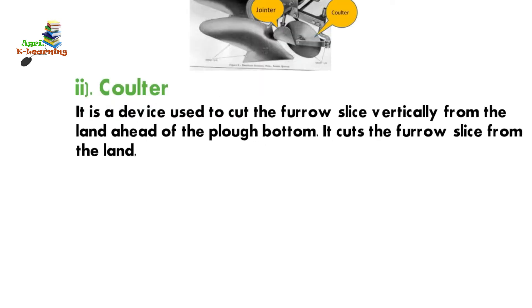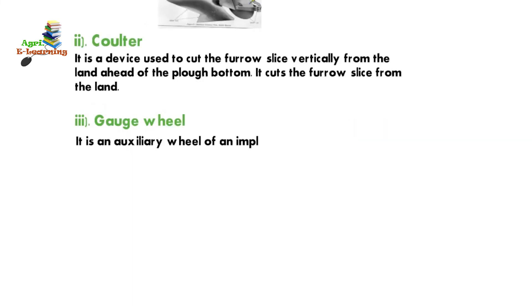It cuts the furrow slice from the land. Gauge wheel: it is an auxiliary wheel of an implement to maintain uniform depth of working.